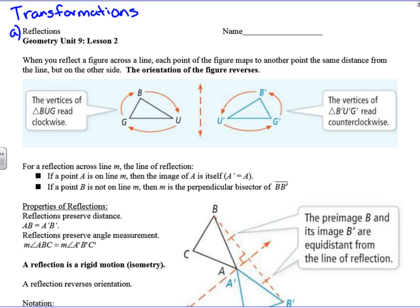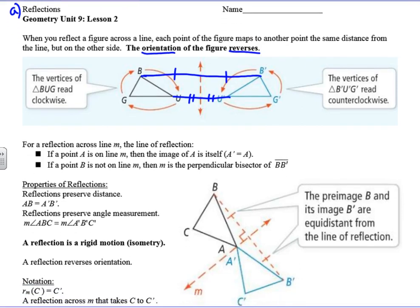So as we look at this triangle here, triangle BUG — B-U-G — we read it clockwise. You see how when we flip it over, if we were to connect B to B-prime, that's the same distance, so it's equidistant across. U to U-prime, that's equidistant across. And in order to get BUG we read it clockwise, but to get B-prime, G-prime, U-prime we would go the other way. So that's why we say the orientation reverses — it is not a direct transformation.